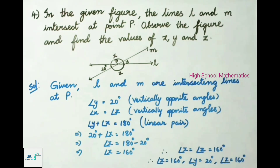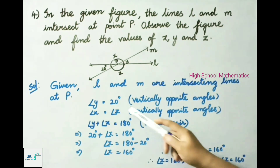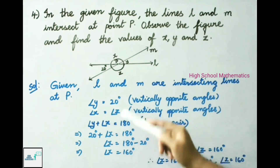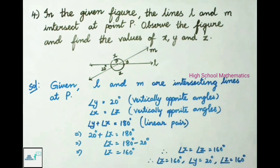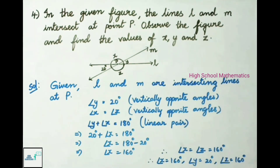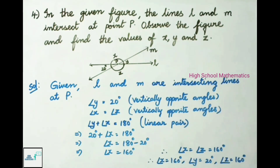From the figure, angle Y plus angle X equals 180 degrees because those two angles form a linear pair. Since angle Y is equal to 20 degrees, substituting gives 20 degrees plus angle X equals 180 degrees. Transposing 20, angle X equals 180 degrees minus 20 degrees, which is 160 degrees.